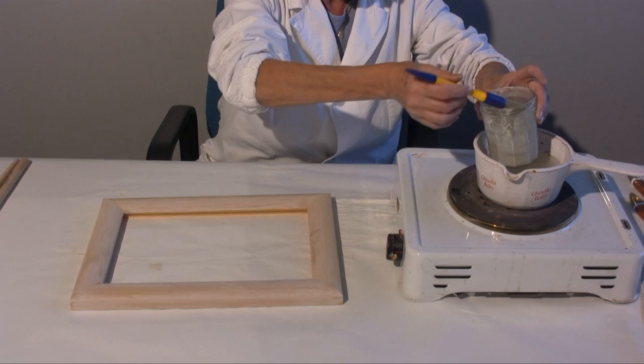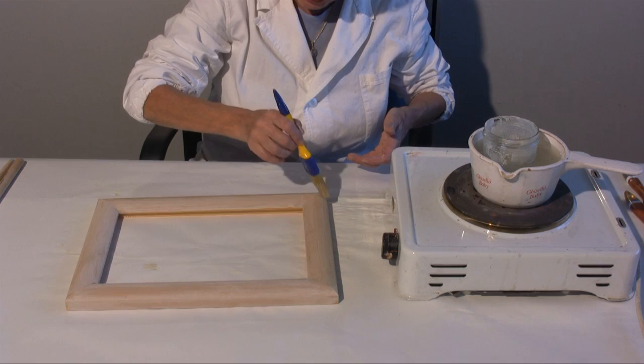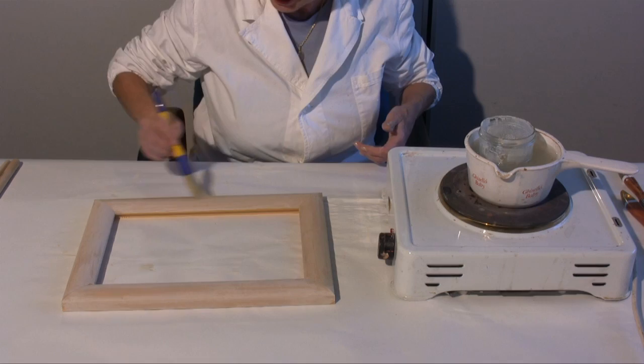You can continue with the second layer when you can see that the plaster has become opaque. You realize that with every layer the drying time will decrease and the colour of the frame will become whiter.